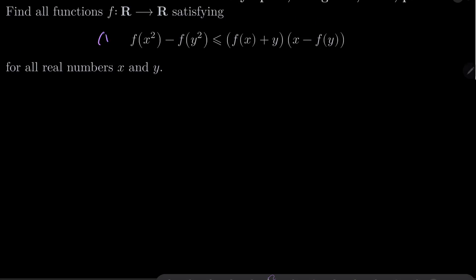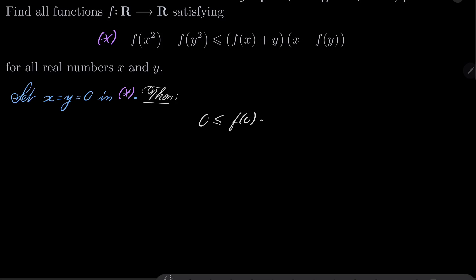Let's call our functional inequality asterisk. First let's set x and y to be 0. Notice that on the left hand side we have 0, while on the right hand side we have f(0+0), so f(0), times 0 minus f(0). After simplification we have that f²(0) ≤ 0, and since we are dealing with real numbers that means f(0) = 0.